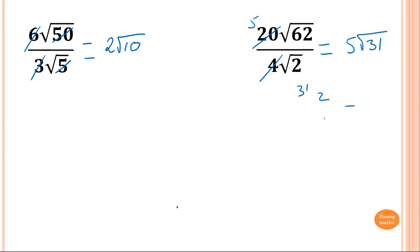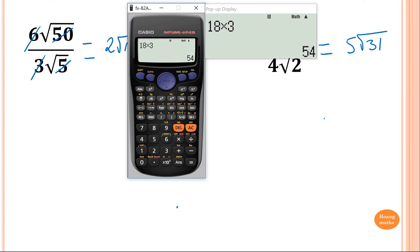Otherwise, just use your calculator if you're not confident. So it just goes 62 over 2, gives 31. In fact, I'll show you how. So all you need to do, you go 62 over 2. See? 31.